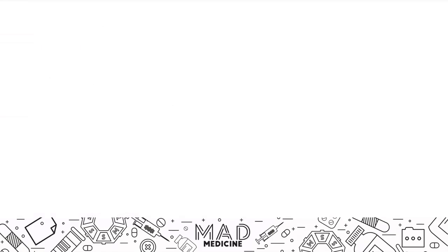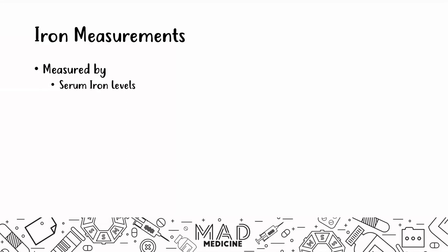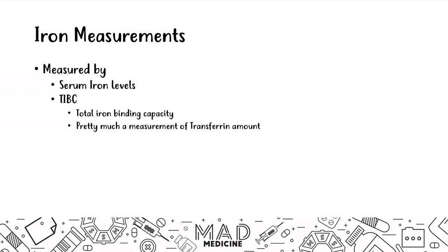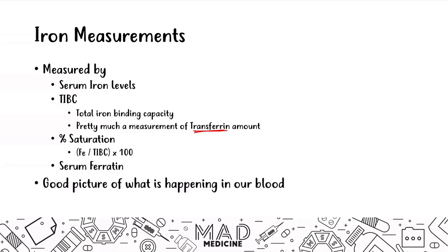You also need to know what the iron measurements mean. Iron is usually measured by serum iron levels, which tells you how much iron is in the serum. You look at the total iron binding capacity, also known as TIBC — this is essentially a measurement of how much transferrin is in your blood. Then you can look at percent saturation — what percentage of the transferrin proteins are saturated with iron. And finally, you have serum ferritin. Together, these give you a good picture of what's happening with your iron stores.